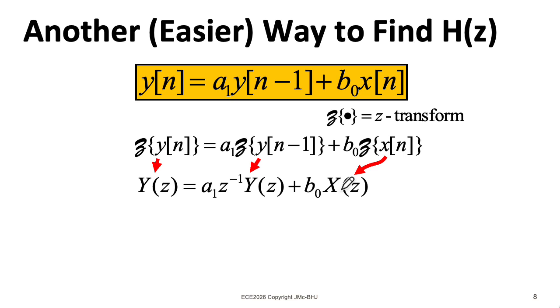Now I want to get all the terms with big X on one side and all the terms with big Y on the other side. So let me take this term here and move it over to the left-hand side. When I do that, I wind up with this minus sign here. And now I can factor out big Y of z to write this kind of form here.